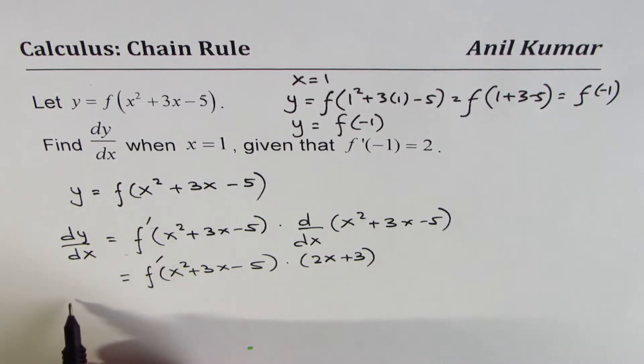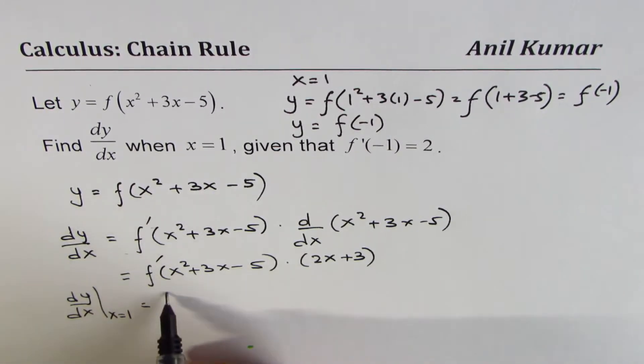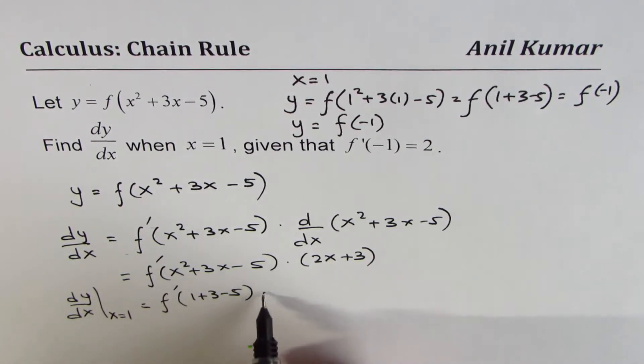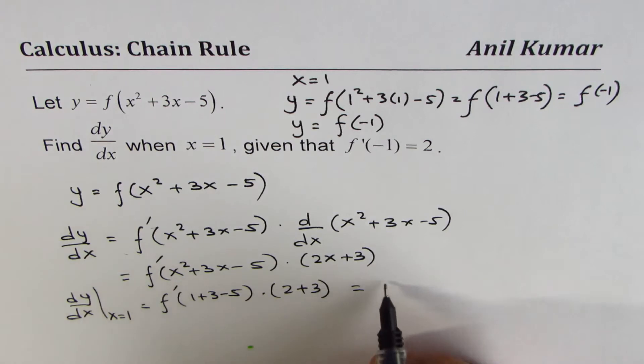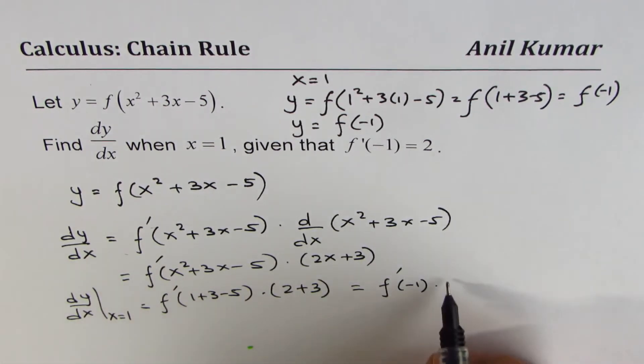We need to find dy/dx at x equals 1. Substituting x as 1, we get f prime of 1 plus 3 minus 5 times 2 times 1 is 2, 2 plus 3. Which is equal to f prime of minus 1 times 5.